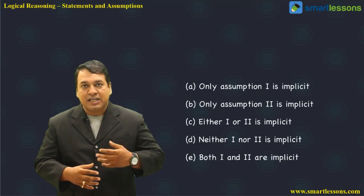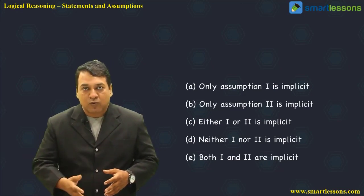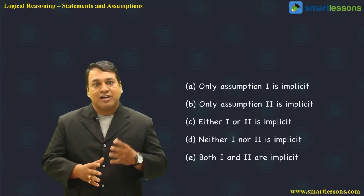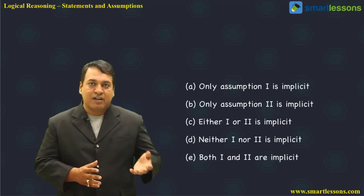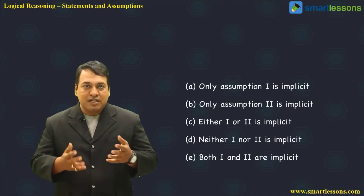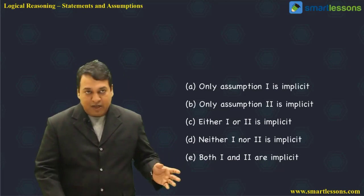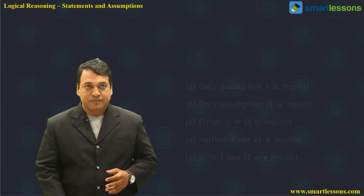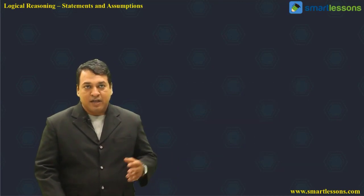Implicit means which is internally assumed — that is the meaning of implicit. Explicit means which is spoken outwardly, which is clearly explained — that is called explicit. So for the word assumption we use implicit, meaning it is internally assumed. Let us look at an example to understand it better.